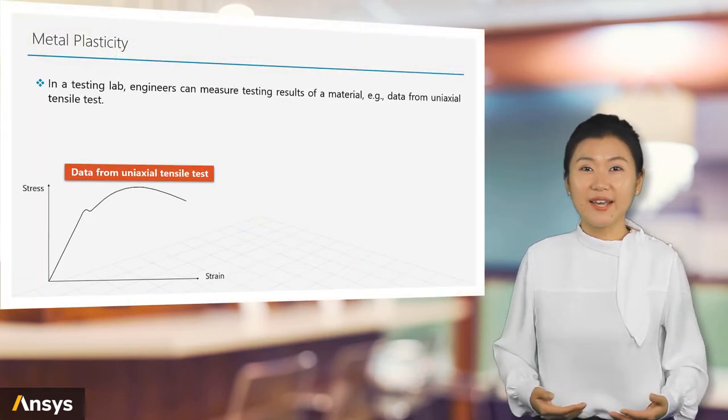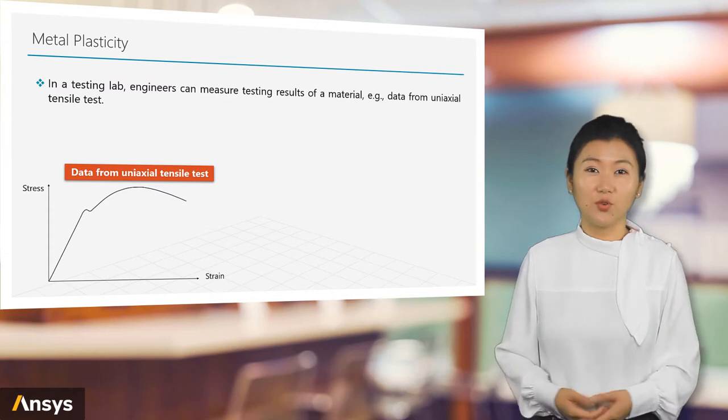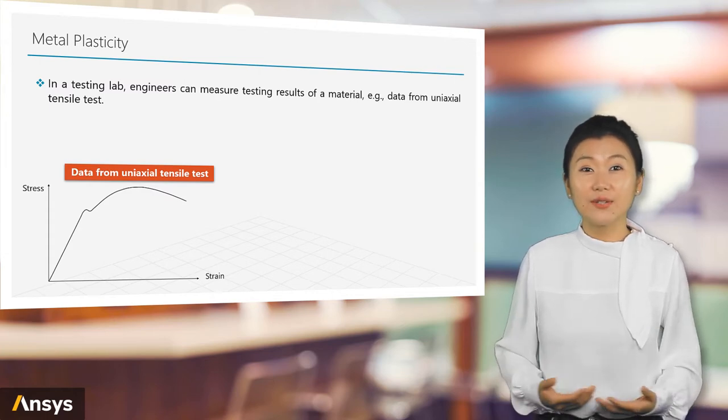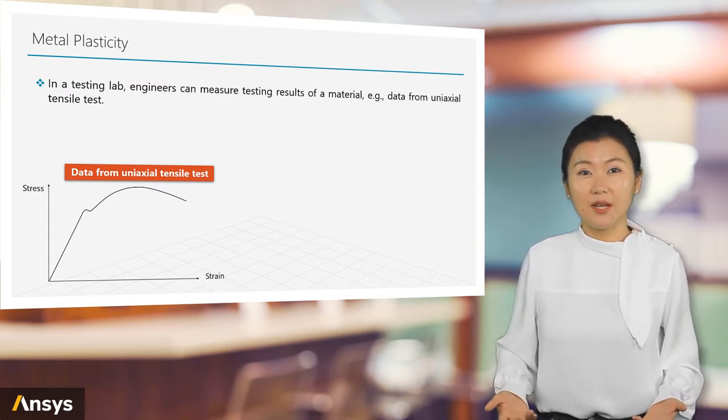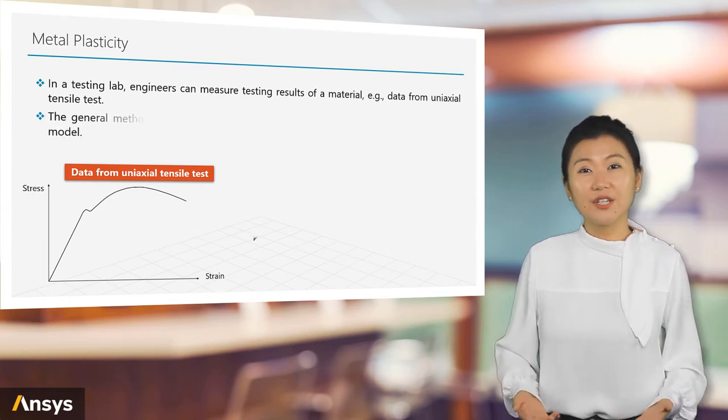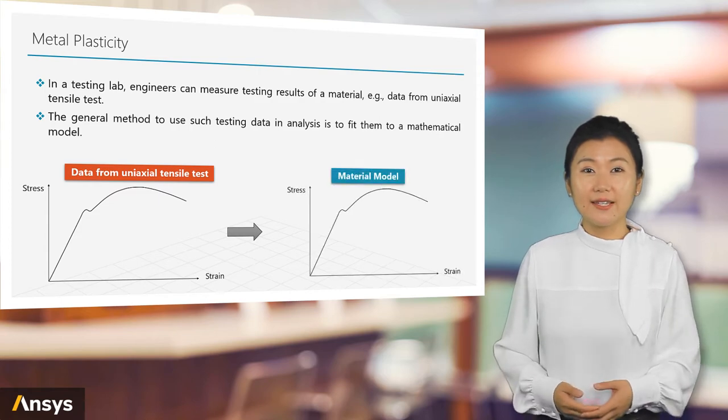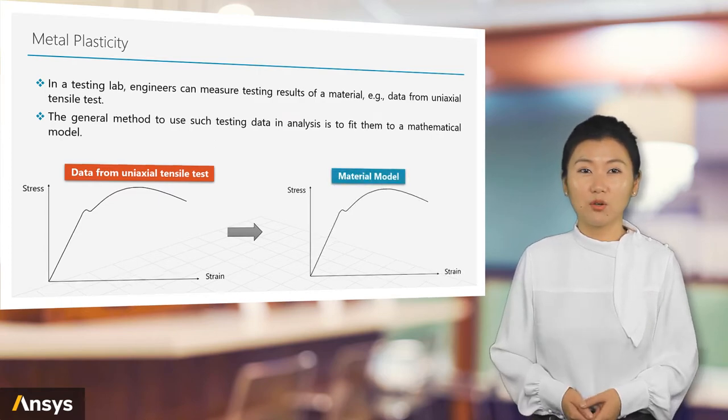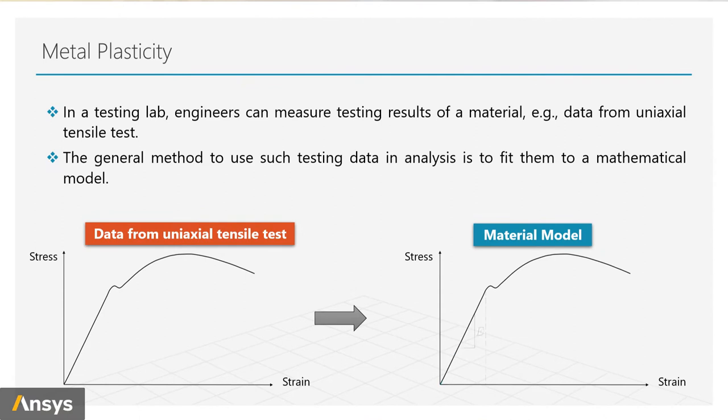In a testing lab, engineers can measure testing results of a material. For example, we can do an actual tensile test of a metal specimen and collect the stress and strain data. The general idea to use such testing data in analysis is to fit it to a mathematical model.